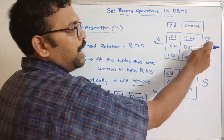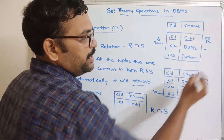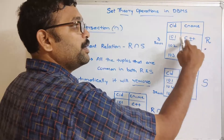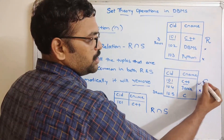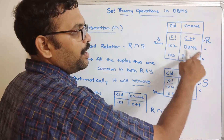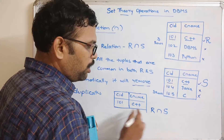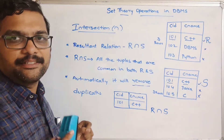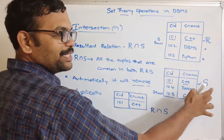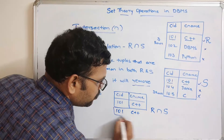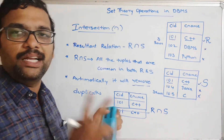102 is in R but not in S, so it is not included. 103 is in R but not in S, so not included. 104 is in S but not in R, so not included. 105 is in S but not in R, so not included. The result of R ∩ S is only 101 C++, the one tuple common to both relations.